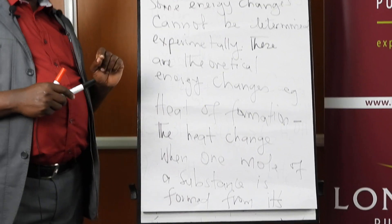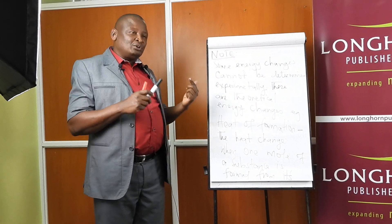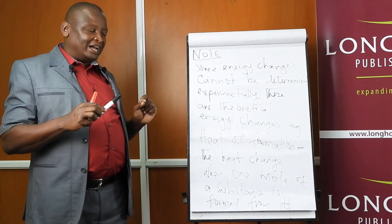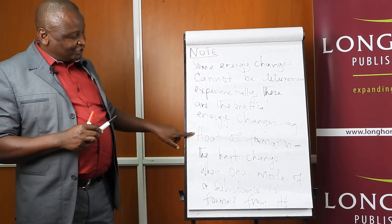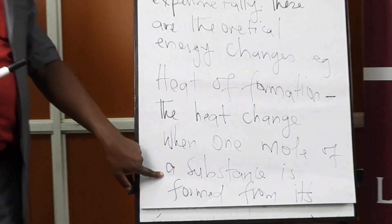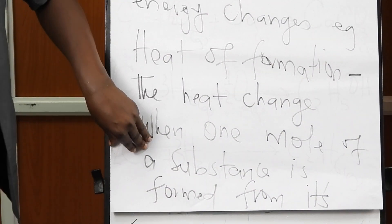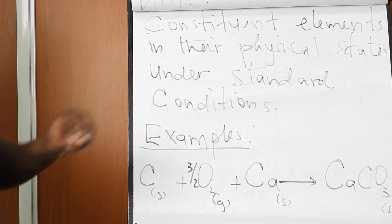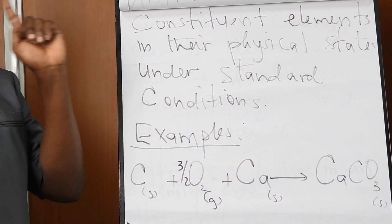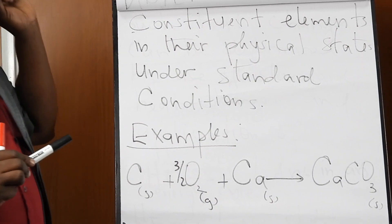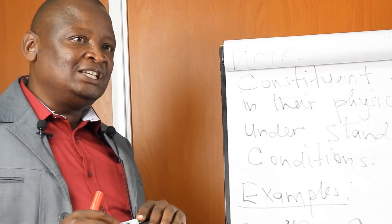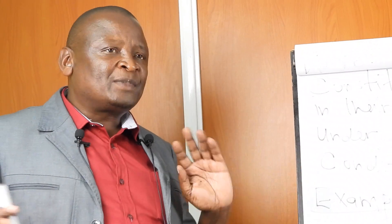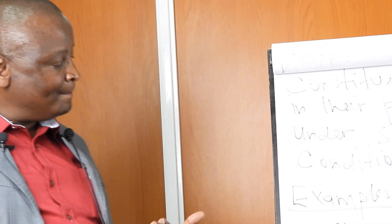Heat of formation is the heat change when one mole of a substance is formed from its constituent elements in their physical states under standard conditions. For example, for calcium carbonate, the assumption is you take calcium, carbon, and oxygen and that gives you calcium carbonate. For ethanol — containing carbon, hydrogen, and oxygen — you take those elements and combine them to get ethanol. In all cases, one mole is being formed, which is why balancing is sometimes done with fractions.